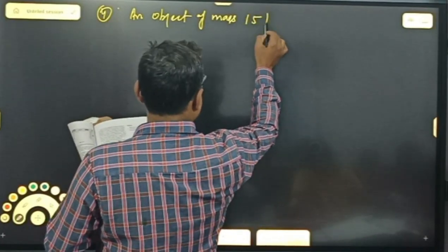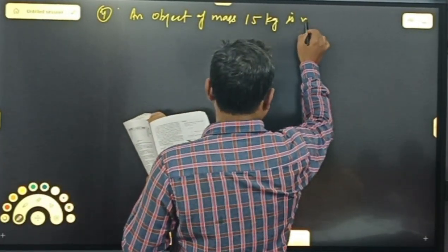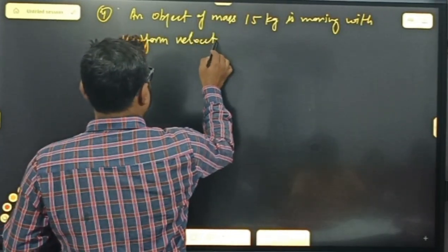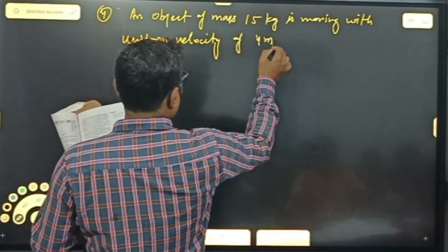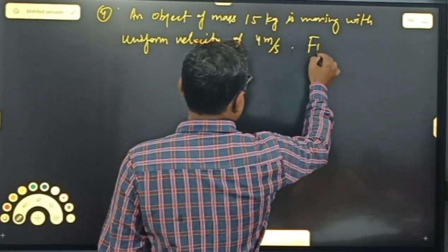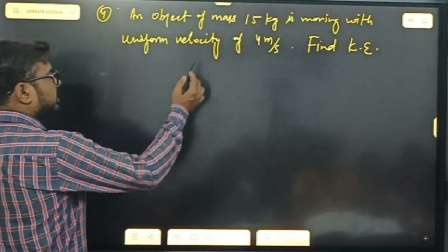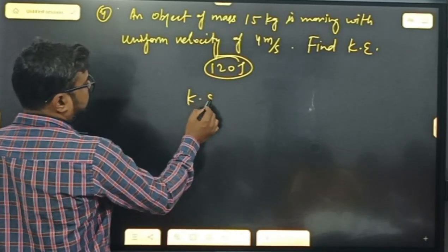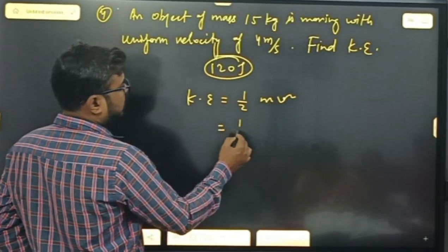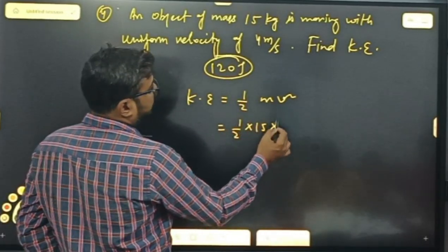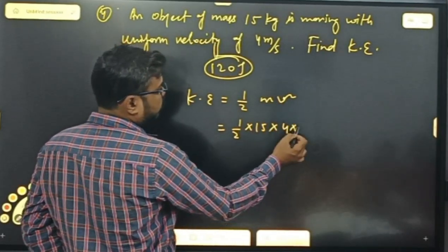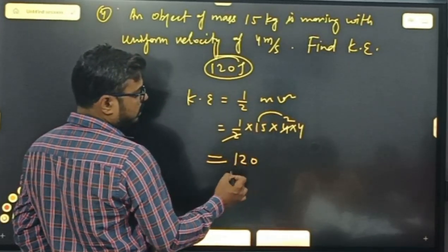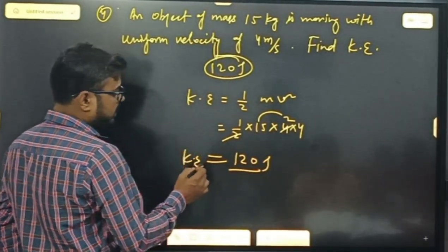An object of mass 15 kg is moving with uniform velocity of 4 meter per second. What is kinetic energy? 1 minute — ठीक है, सब का 120 आ रहा है। Kinetic energy = ½mv² = ½ × 15 × 16 = 120 Joule।